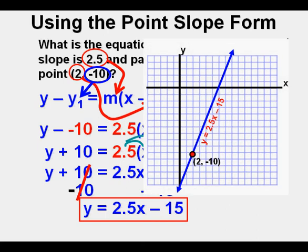And here is the equation graph. We can see that the line does go through 2 comma negative 10.